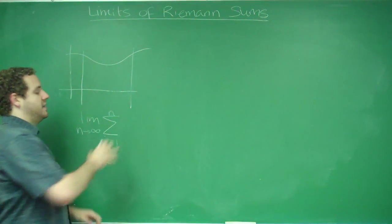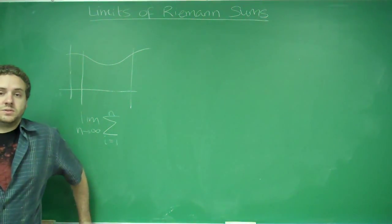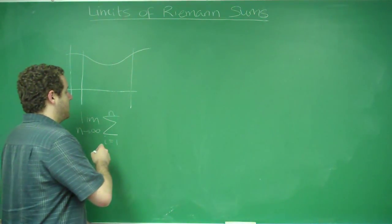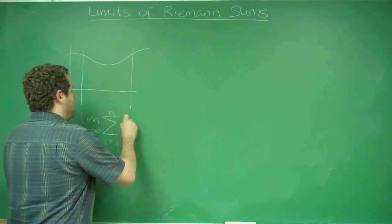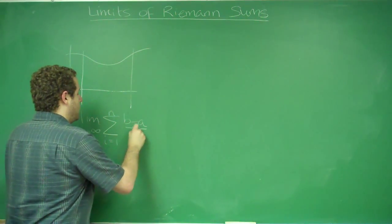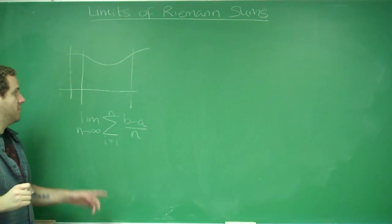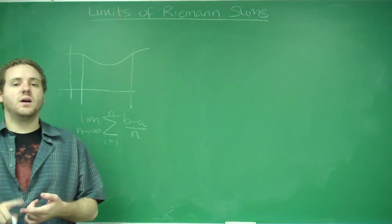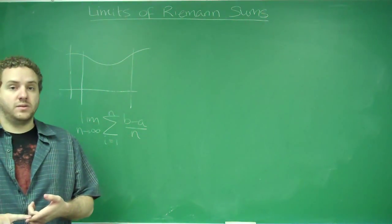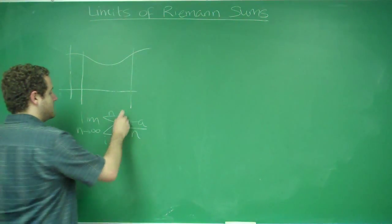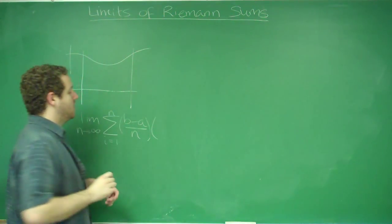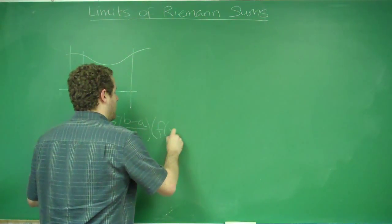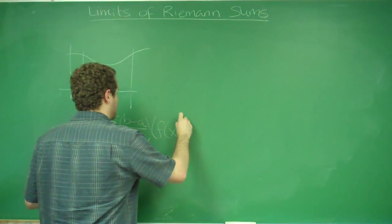What we need to add up is the area of all the rectangles. The area of the rectangles will be b minus a over n — the width. Remember from our Riemann sum video, b minus a over n is the width of every rectangle. Times the height of every rectangle, which is f of xi star.